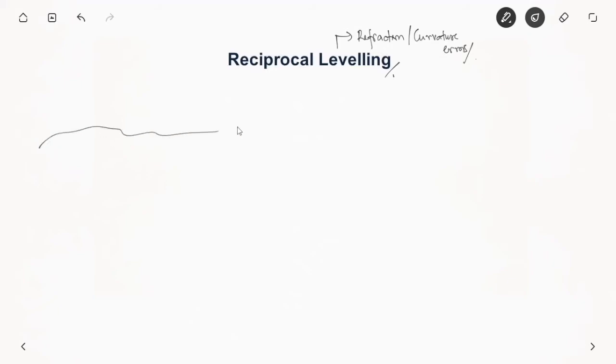So here what you do is suppose you want to know the elevation between point A and B, or you know the reduced level of A and you want to determine the reduced level of point B. So first what you do is you set up an instrument near point A itself and cite the staff on point A and then you cite the staff on point B.